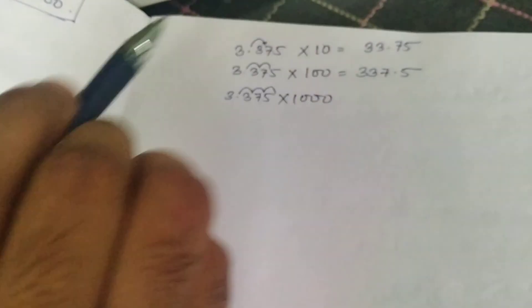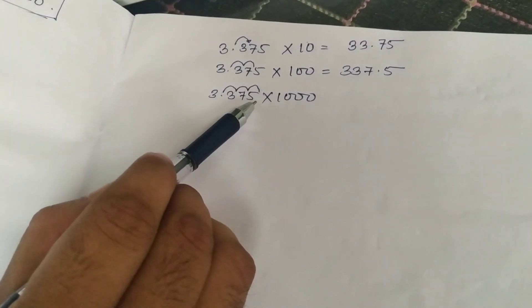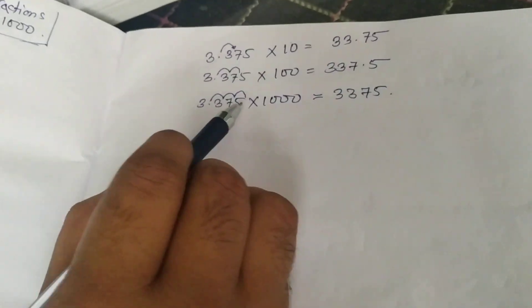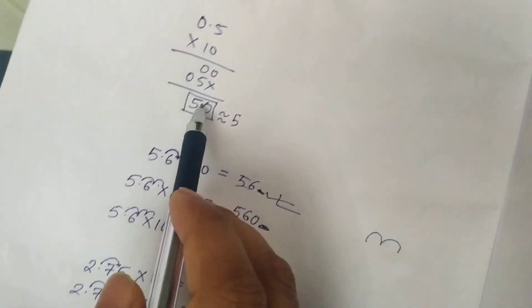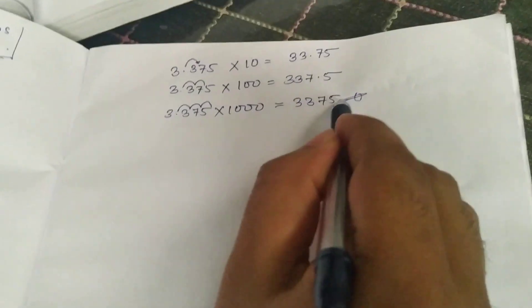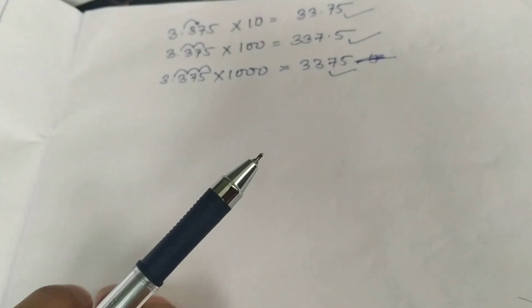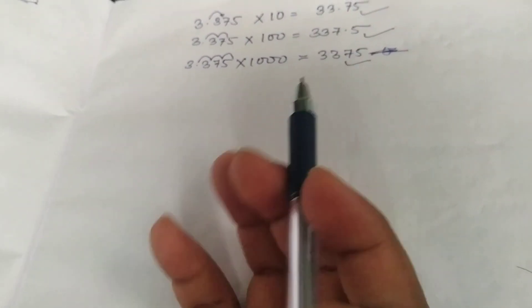For 3.375 × 1000, the decimal moves three steps — it comes after 5. There are no empty boxes, so we write 3375. We don't write the decimal point since there's nothing after it. So: 3.375 × 1000 = 3375, 3.375 × 100 = 337.5, 3.375 × 10 = 33.75.